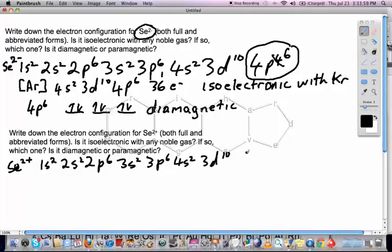Now for regular selenium, it would be 4p4. Since it's Se2+, we're going to remove 2 electrons from that, and we're going to make it 4p2. So Se2+ is going to be this 4p2, and the electron configuration in abbreviated form would be [Ar] 4s2 3d10 4p2. That's for Se2+.